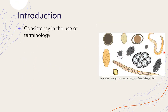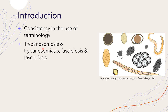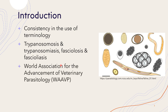Consistency in the use of terminology is an important requirement for clear communication in any field of science. In contrast to the basically homogenous terminology of bacterial and fungal diseases, different names are used with varying frequency for denoting the same disease entity in parasitology — such as trypanosomosis and trypanosomiasis, fasciolosis and fascioliasis, and others. This inconsistency induced the World Association for the Advancement of Veterinary Parasitology, or WAAVP.